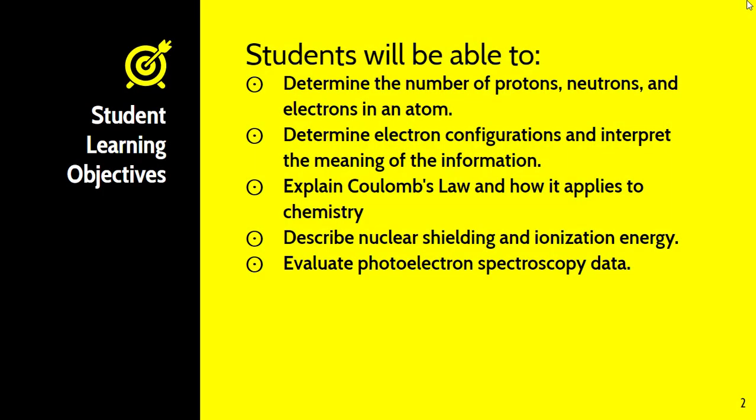We have quite a bit of learning objectives for today. Students will be able to determine the number of protons, neutrons, and electrons in an atom. They should also be able to write electron configurations and interpret the meaning of that information. You should be able to explain Coulomb's Law and how it applies to chemistry, describe nuclear shielding and ionization energy, and lastly, evaluate photoelectron spectroscopy data.